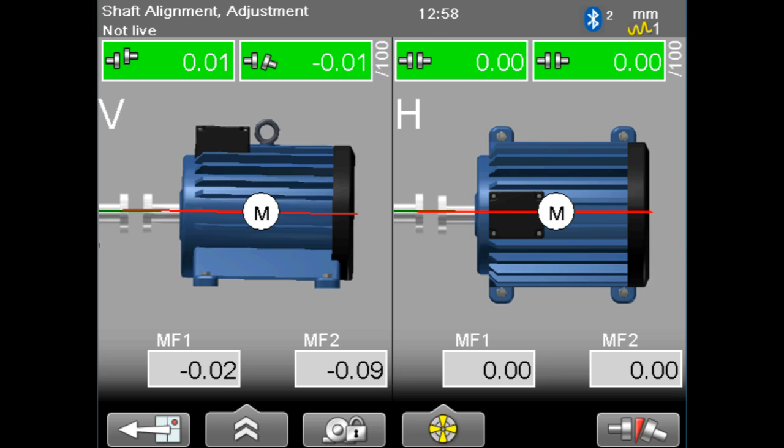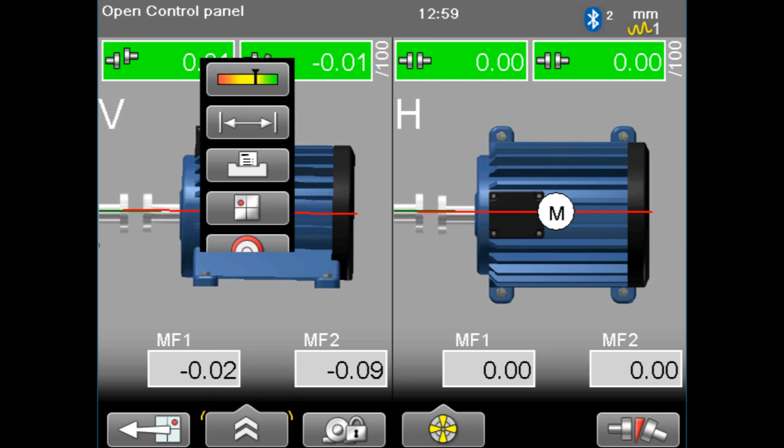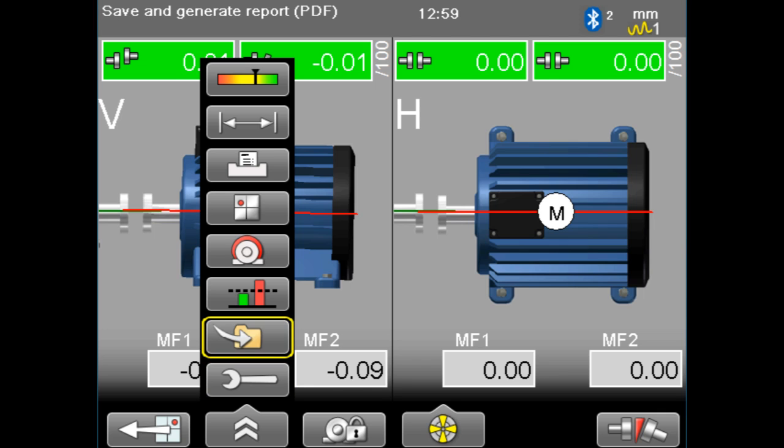The alignment system is showing us that the machines are within tolerance. To reach the quality assessment screen, push the chevron and select quality assessment.